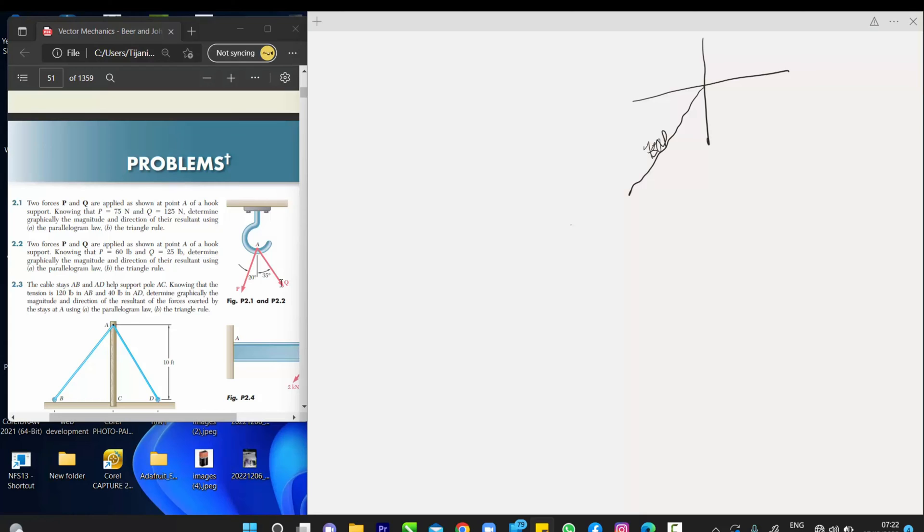Sorry, 75 Newton, right? So, the angle between P to this plane or to this line is 20 degrees. So, we put that 20 degrees. Then, we draw the second Cartesian for our Q.